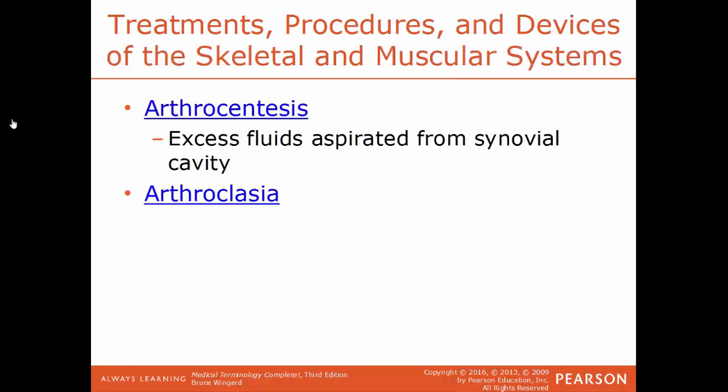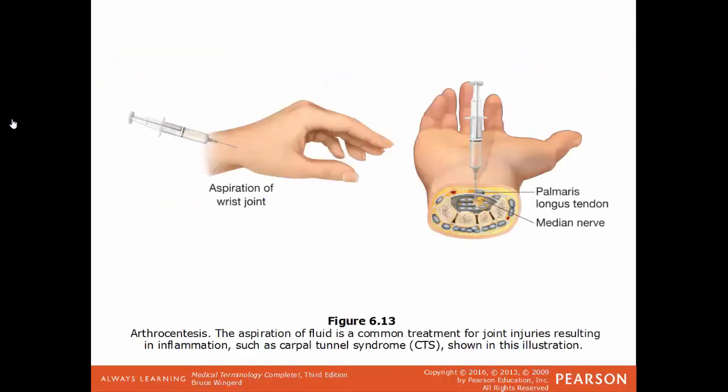Arthrocentesis is the removal of excess fluid from a synovial cavity, used to help diagnose gout or septic arthritis. Arthroclasia is the breaking up of adhesions found in an ankylosis — whenever a joint is abnormally stiff, breaking up those adhesions is arthroclasia. An example of arthrocentesis uses a syringe to withdraw synovial fluid, such as to treat carpal tunnel syndrome and relieve pressure on the median nerve.